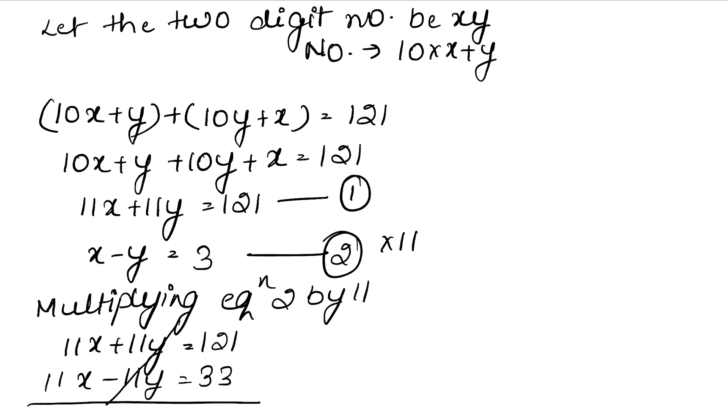See, this is cancelled. Now what are these two? 11 plus 11 is 22x equals 121 plus 33. Here, 154. So x equals 154 upon 22. 11 is gone, 11, 2 is 22, 11, 1 is 11, 11, 4 is 44, 2, 1 is 2, 2, 7 is 14. So x equals 7.